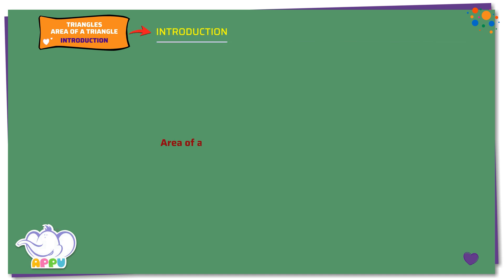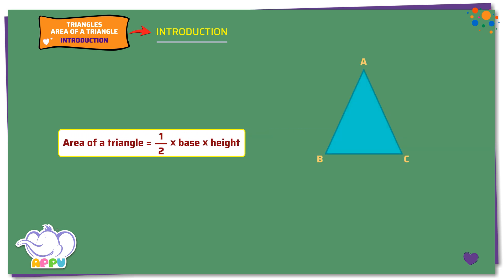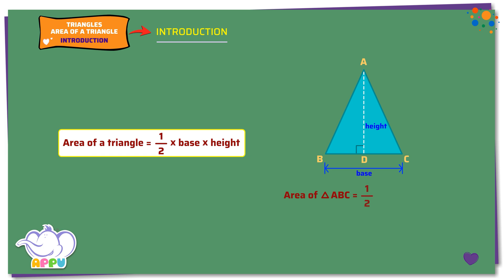Area of a Triangle is 1/2 times base times height. In this triangle ABC, BC is the base. Draw a line AD perpendicular to BC — AD is the height. So the area of triangle ABC equals 1/2 times base times height, which equals 1/2 times BC times AD.